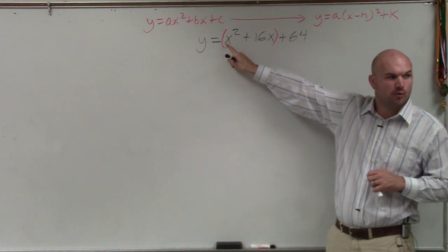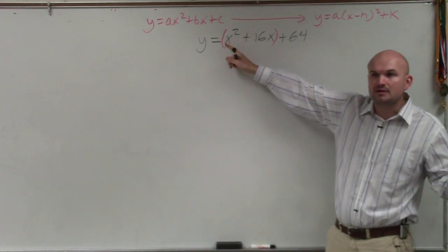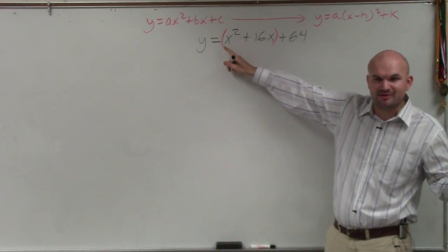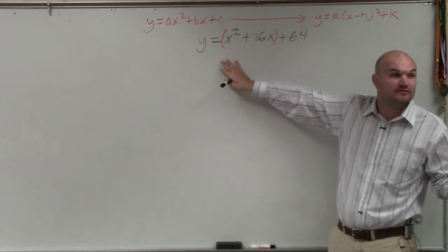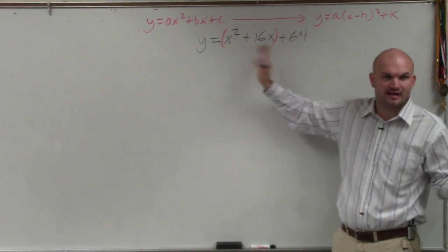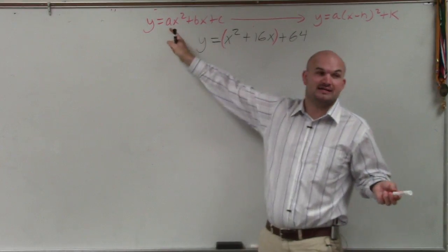Well, you guys can see there is a 1 in front of the x squared. There's not being multiplied by any other number, so it has to be 1. So therefore, I don't need to factor anything out. Don't factor out the x. We're only factoring out a number, so a is equal to 1.